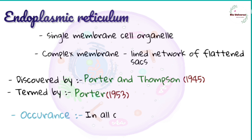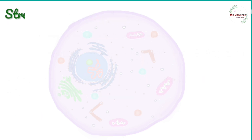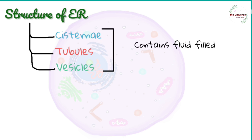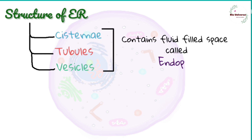Occurrence: it occurs in all eukaryotic cells except mature RBCs. Structure: the endoplasmic reticulum is a network of three types of elements — cisternae, tubules, and vesicles. All of them contain a fluid-filled space or lumen with endoplasmic matrix, which is quite different from the cytoplasmic matrix.